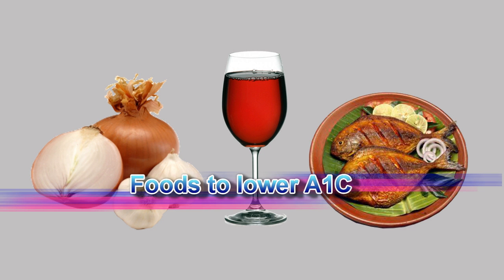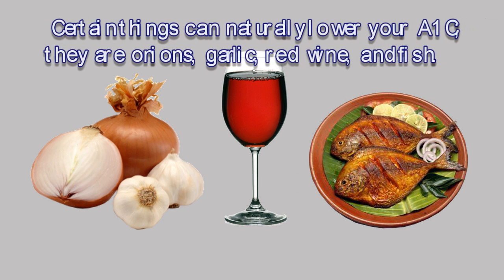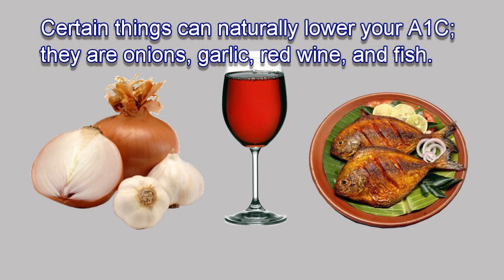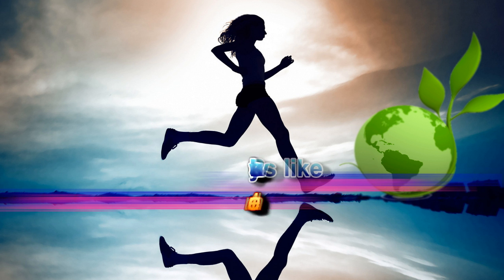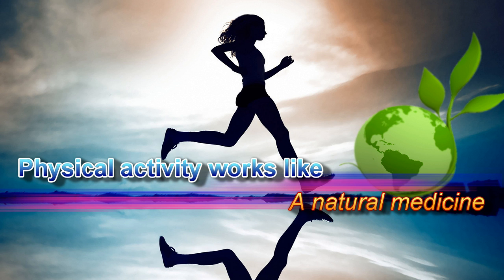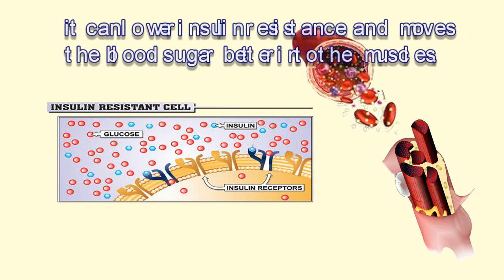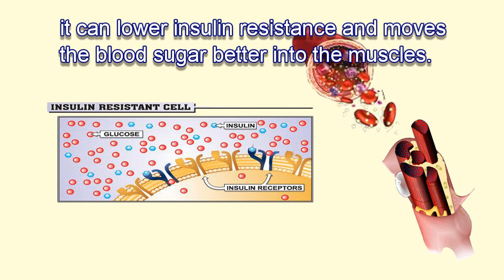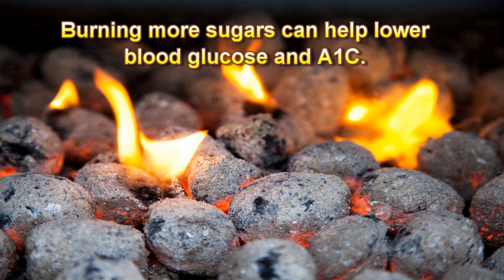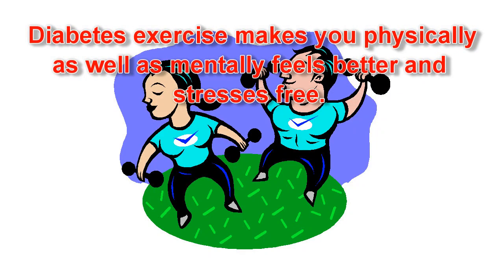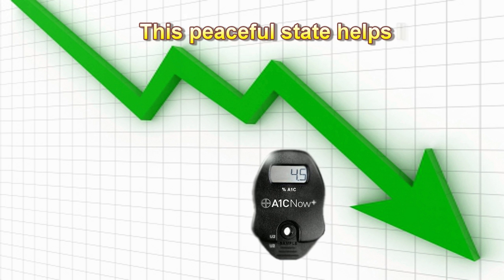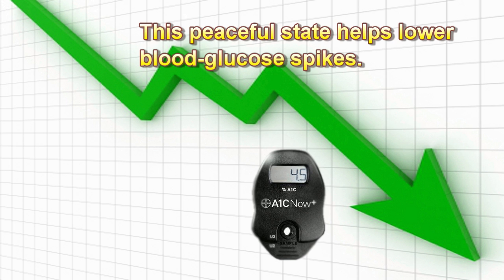Certain foods can naturally help lower your A1c, such as onions, garlic, red wine, and fish. Physical activity works like a natural medicine. It can lower insulin resistance and moves blood sugar better into the muscles. Burning more sugars helps lower blood glucose and A1c. Diabetes exercise makes you feel physically and mentally better and stress-free, and this peaceful state helps lower blood glucose spikes.